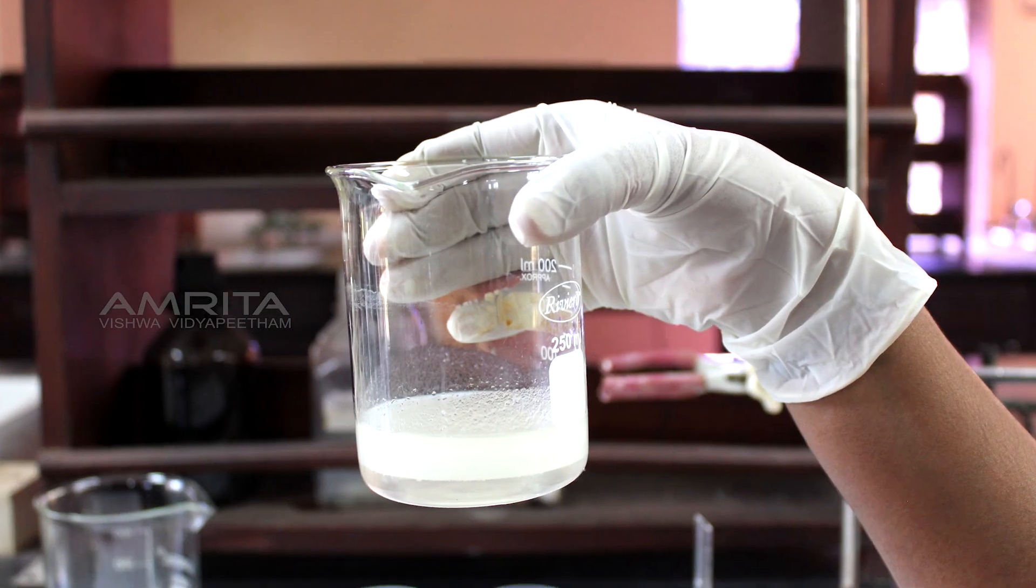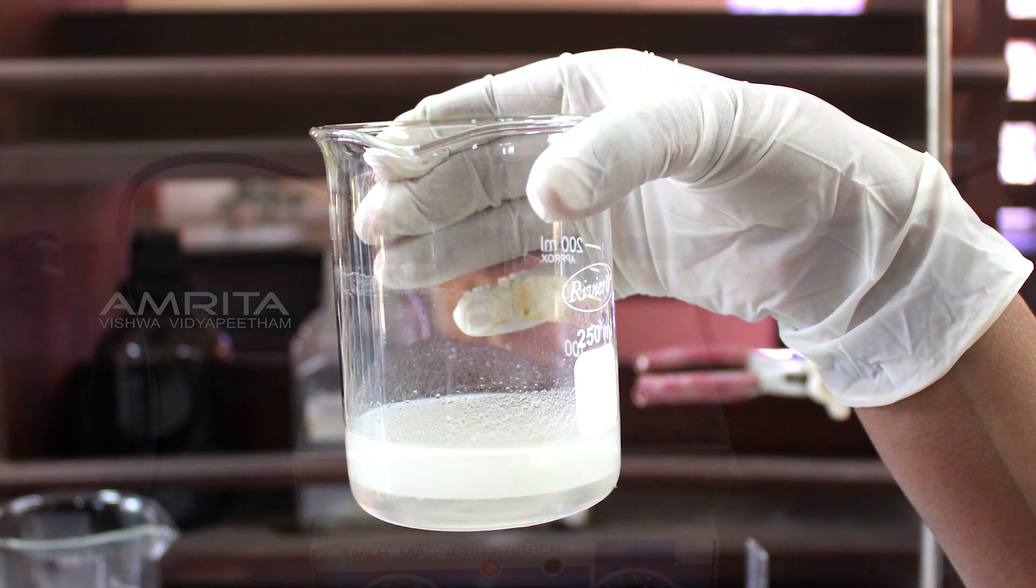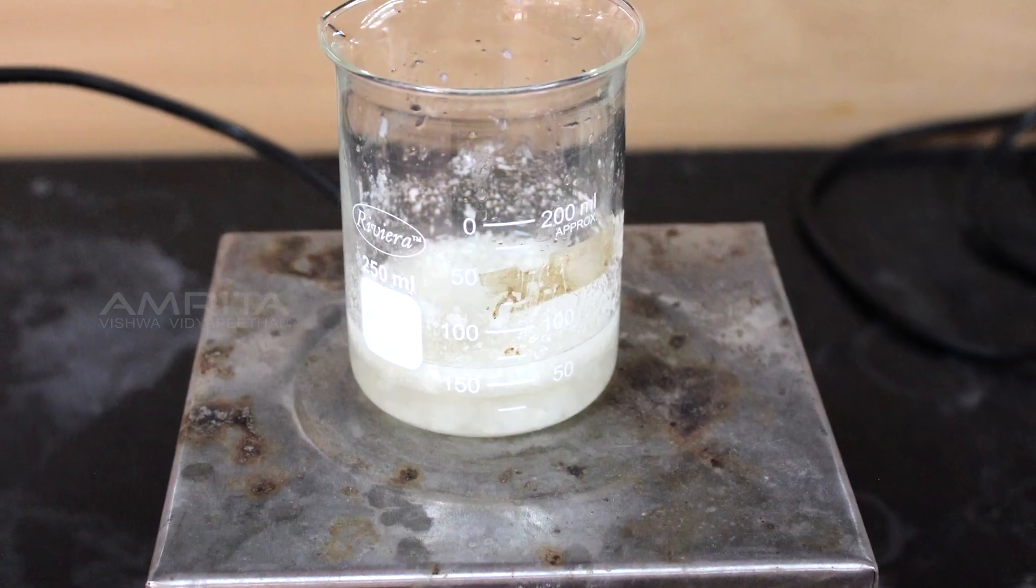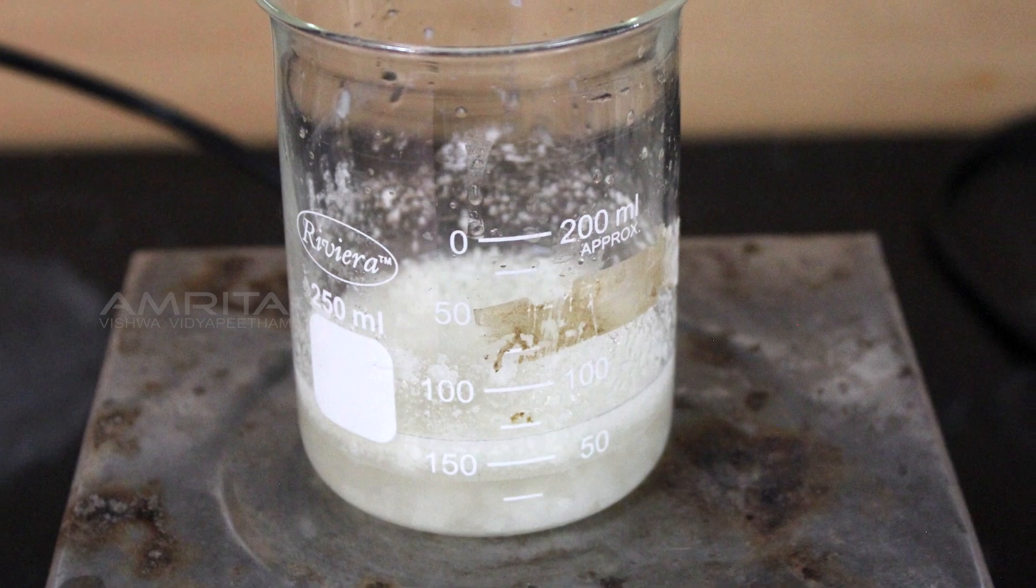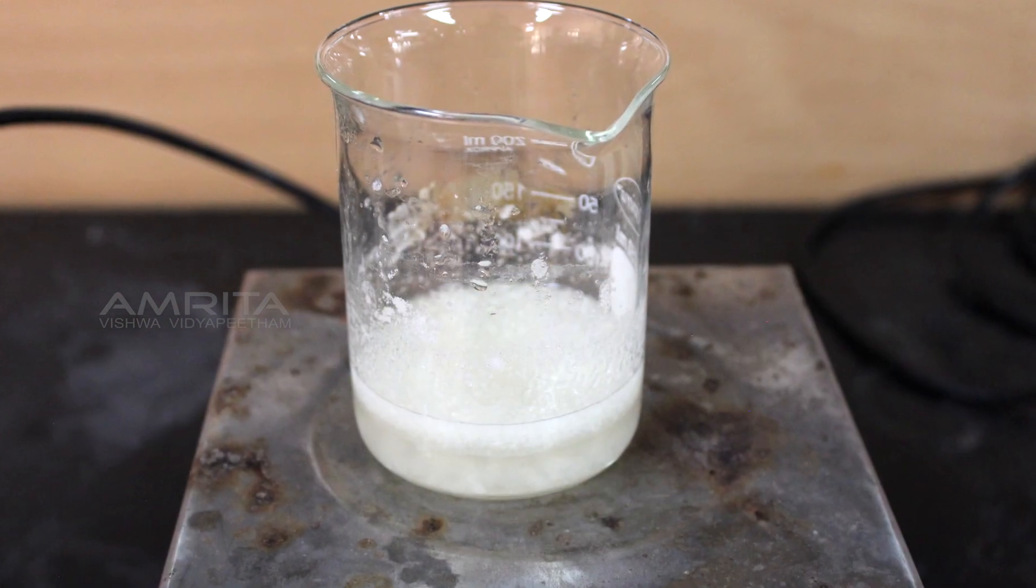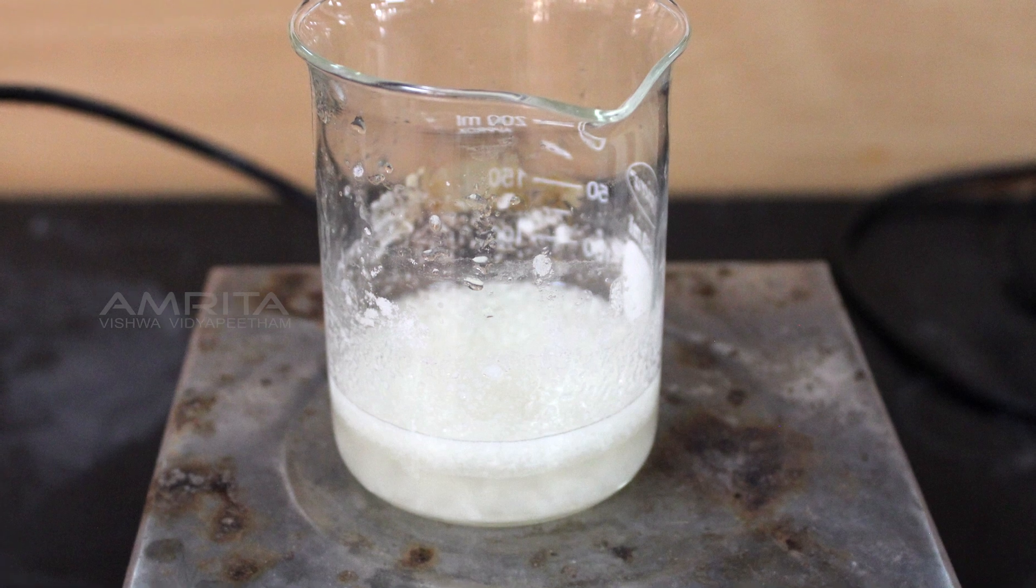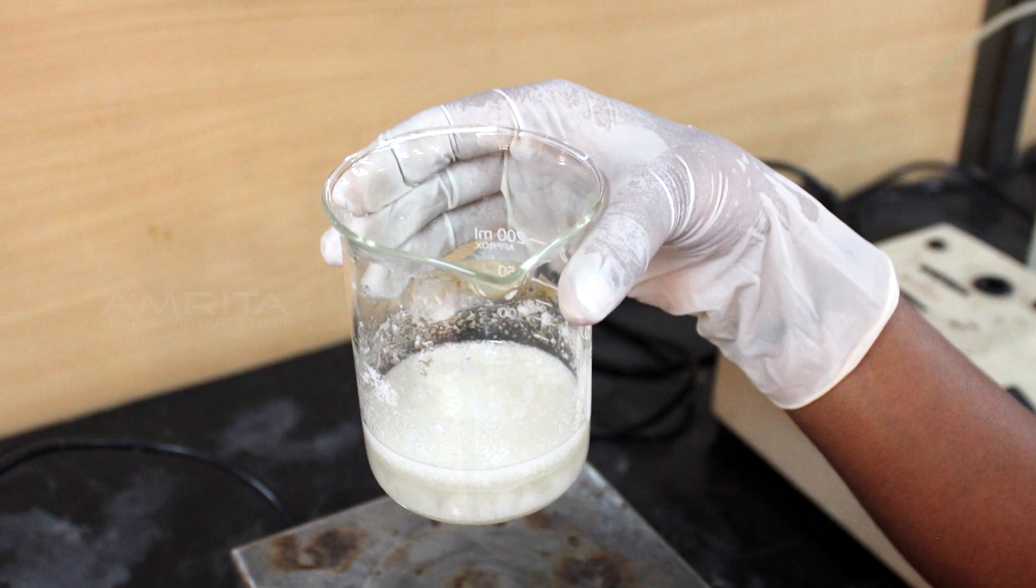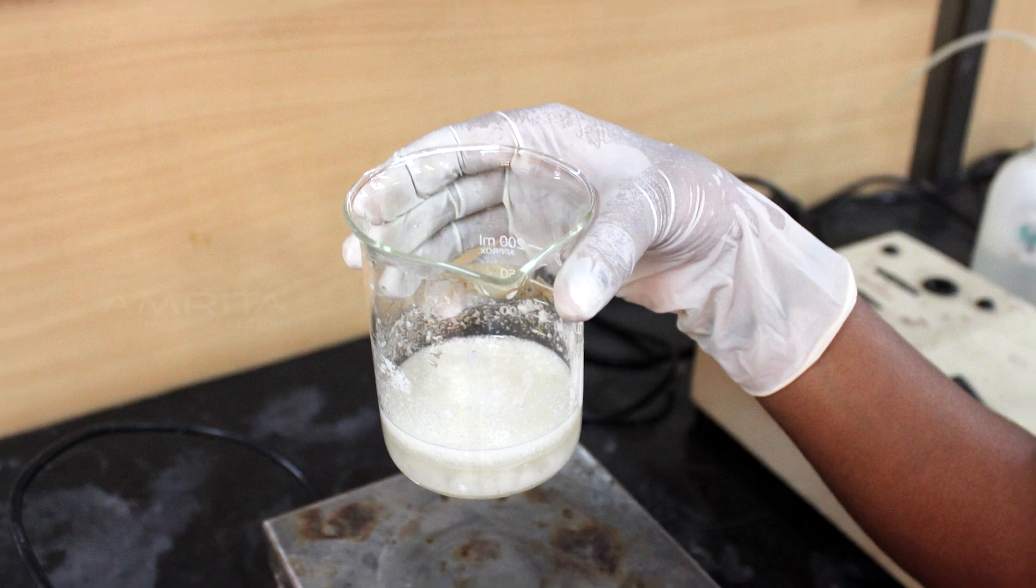Take the beaker containing the mixture and place it on a hot plate. Heat the beaker using the hot plate till the mixture becomes a whitish paste. The white suspension formed is made up of soap and glycerol. This process of formation of soap is called saponification.